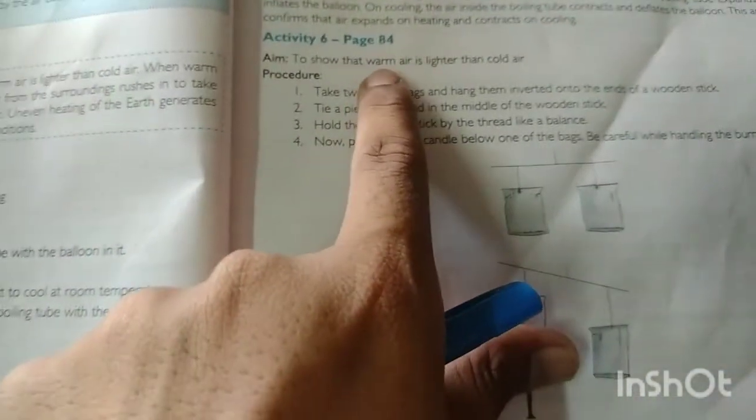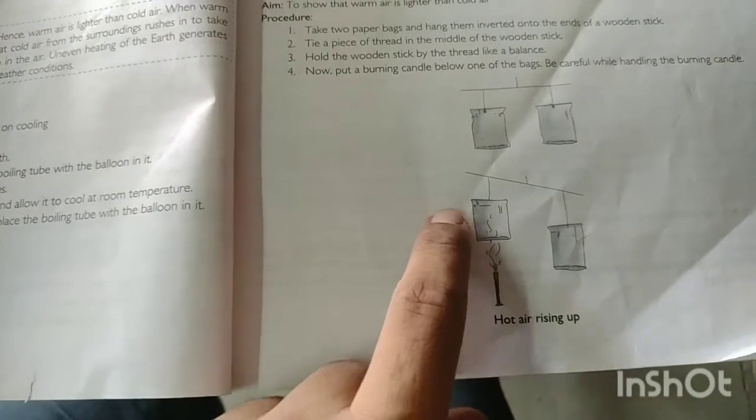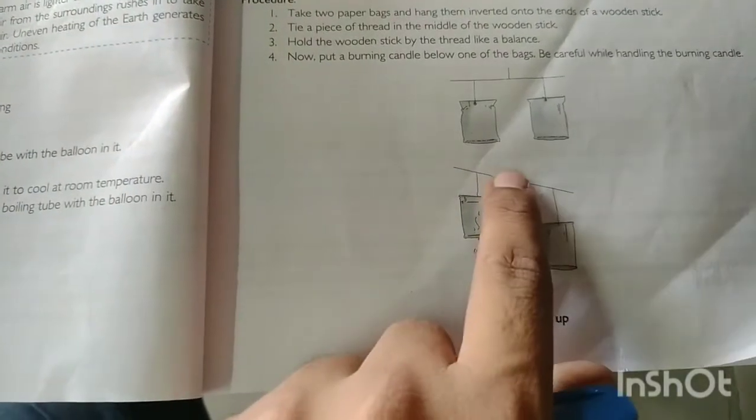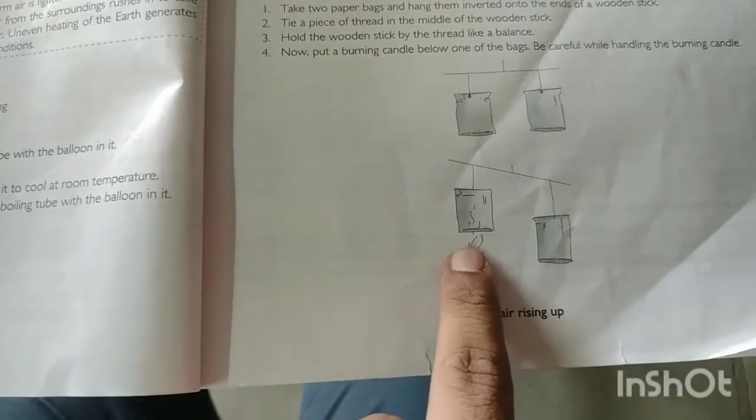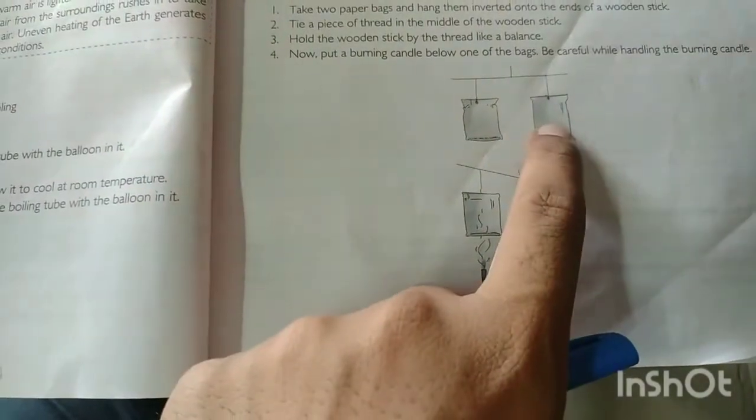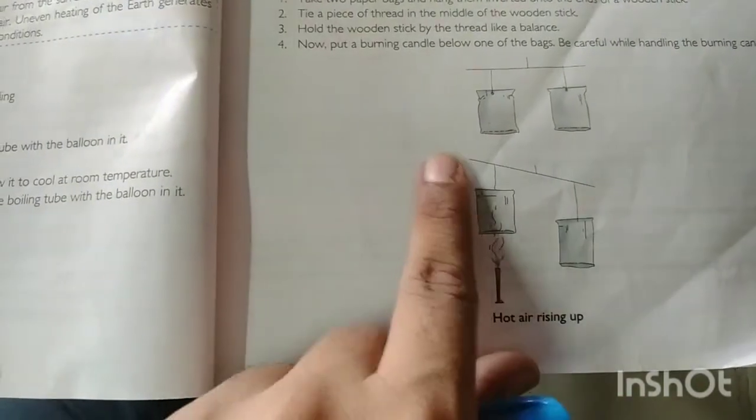This activity shows that warm air is lighter than cold air. Here is the plastic bag with warm air. When the air is lighter, it will go up. This is why the balance we put on the bag is disturbed, and this one is going to go up.